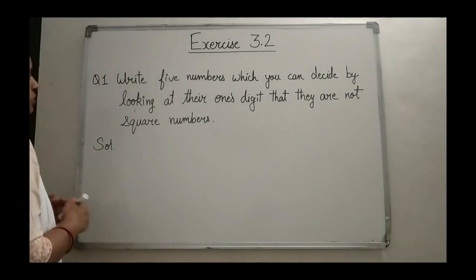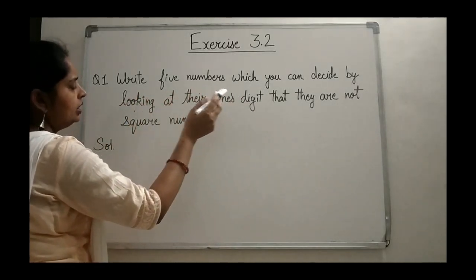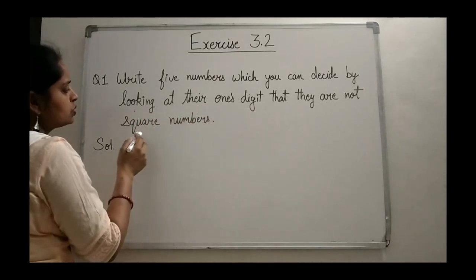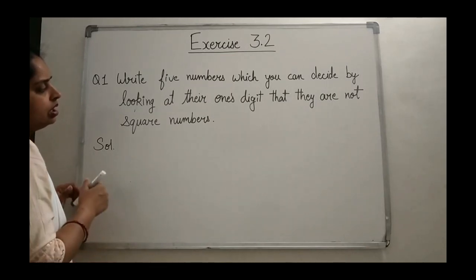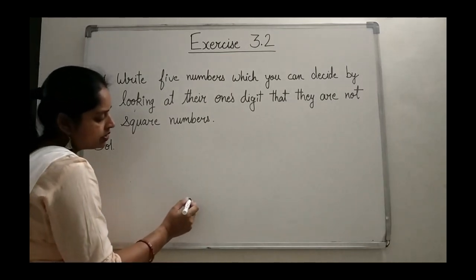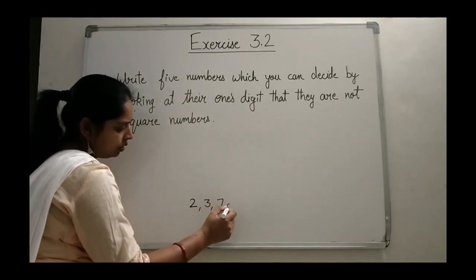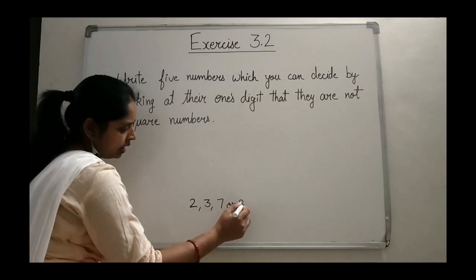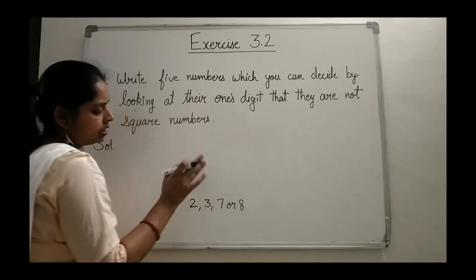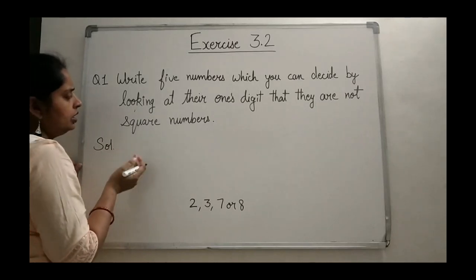The very first question: write 5 numbers which you can decide by looking at their unit digit that they are not square numbers. Yesterday we covered the property that a number ending by 2, 3, 7, or 8 will never be a perfect square number.